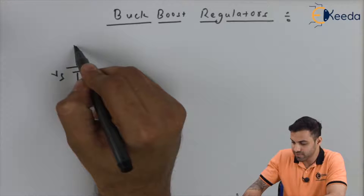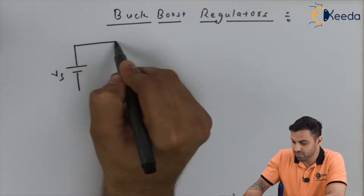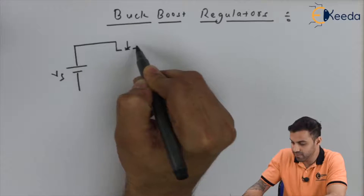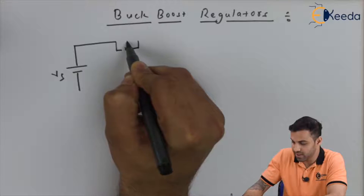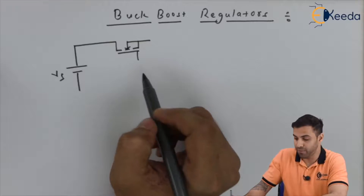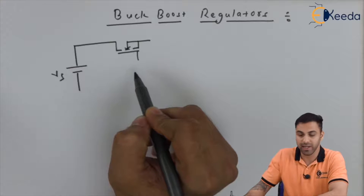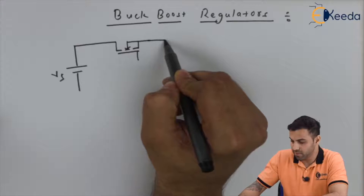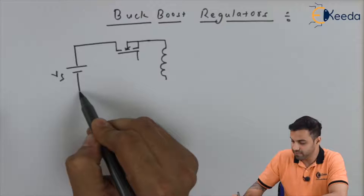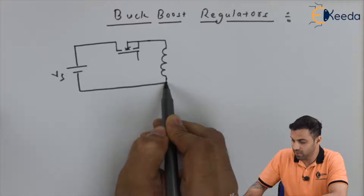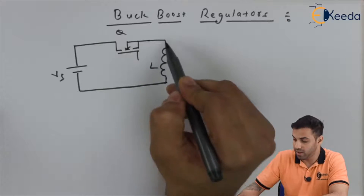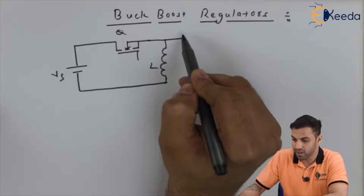This is the supply voltage. I have the MOSFET connected here — let's say this is an N-type MOSFET. This is the gate control drive connected here. Now I have the inductor connected here — let Q be the switch and L be the inductor. I have a diode connected here as well.